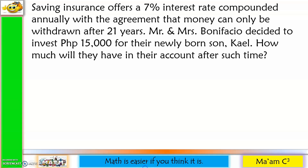First example: Saving Insurance offers a 7% interest rate compounded annually with the agreement that money can only be withdrawn after 21 years. Mr. and Mrs. Bonifacio decided to invest 15,000 pesos for their newly born son, Kael. How much will they have in their account after such time?